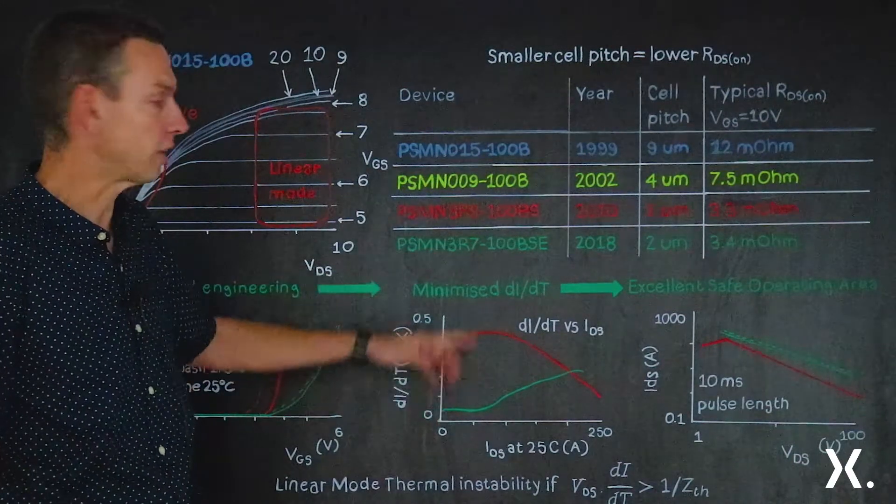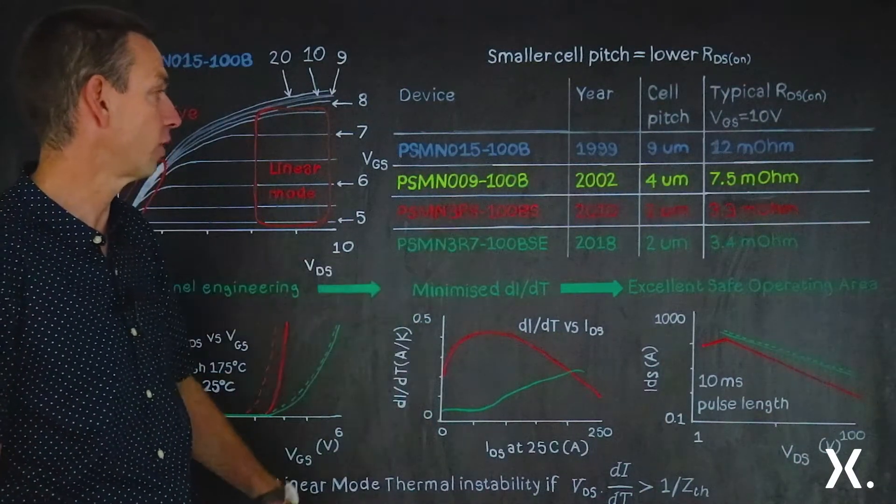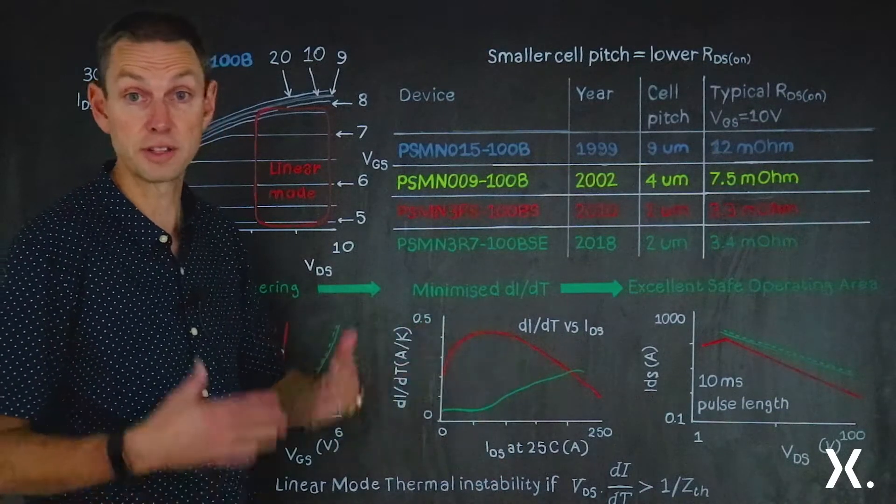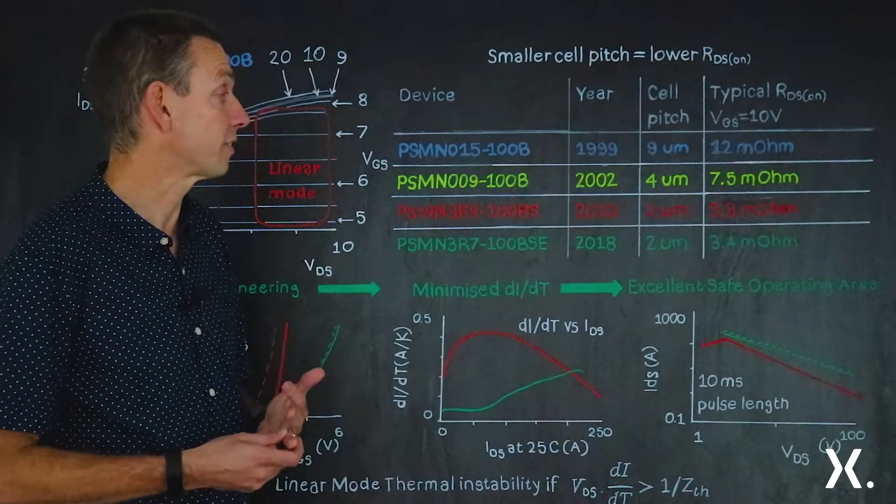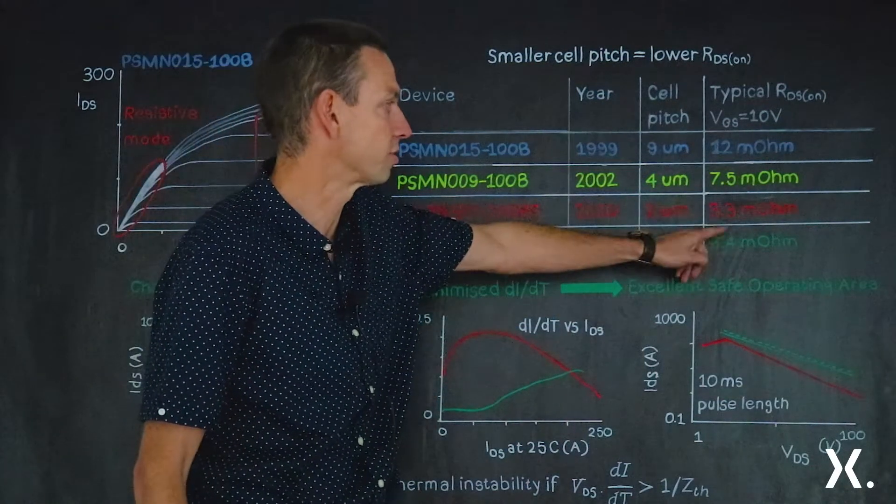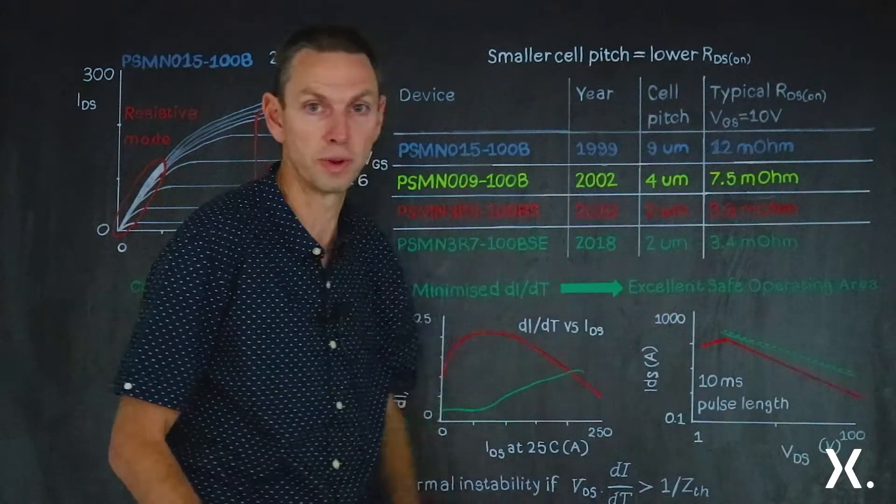From its characteristics, it looks very similar to the PSMN-3R8-100BSE. It's made with the same size piece of silicon in the same package, with the same silicon technology. It's got the same cell pitch, 2 microns, and more or less the same typical resistance, 3.3 milliohms, 3.4 milliohms.